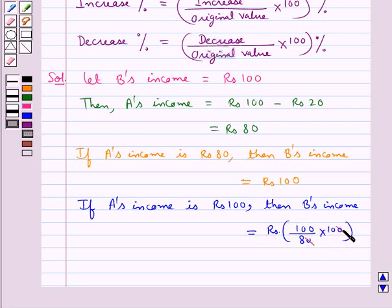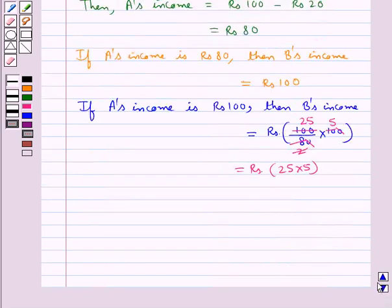Now, this zero cancels with this zero. Four, two times is eight, and four, twenty-five times is one hundred, and two, five times is ten. So this is equal to Rs. 25 times 5, equal to Rs. 125, which would be B's income when A's income is Rs. 100.